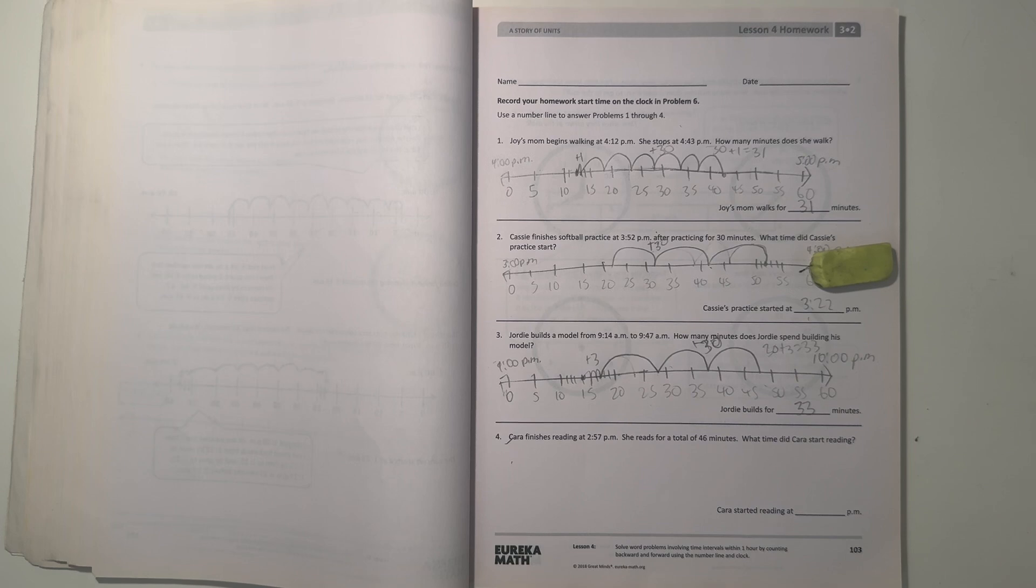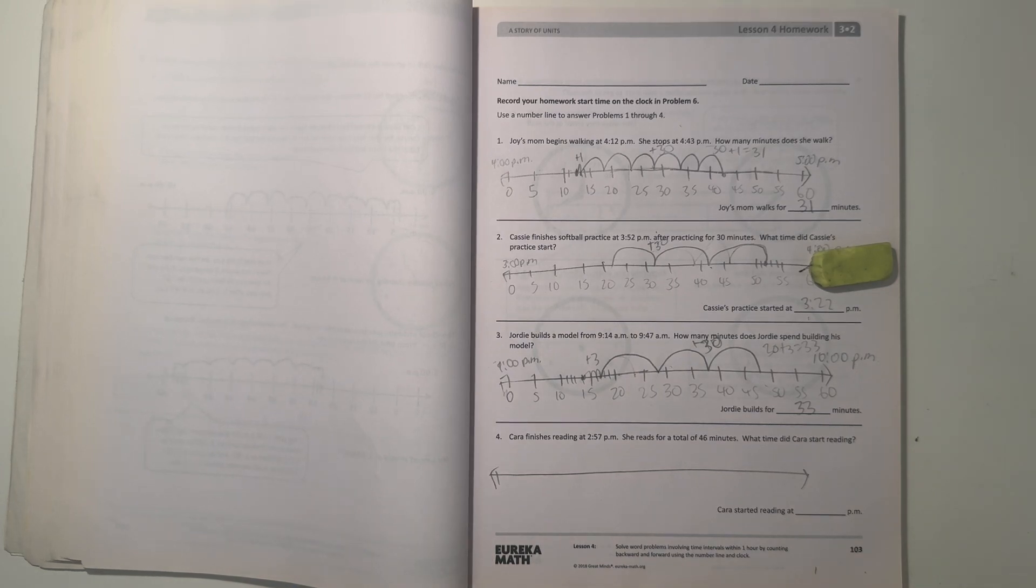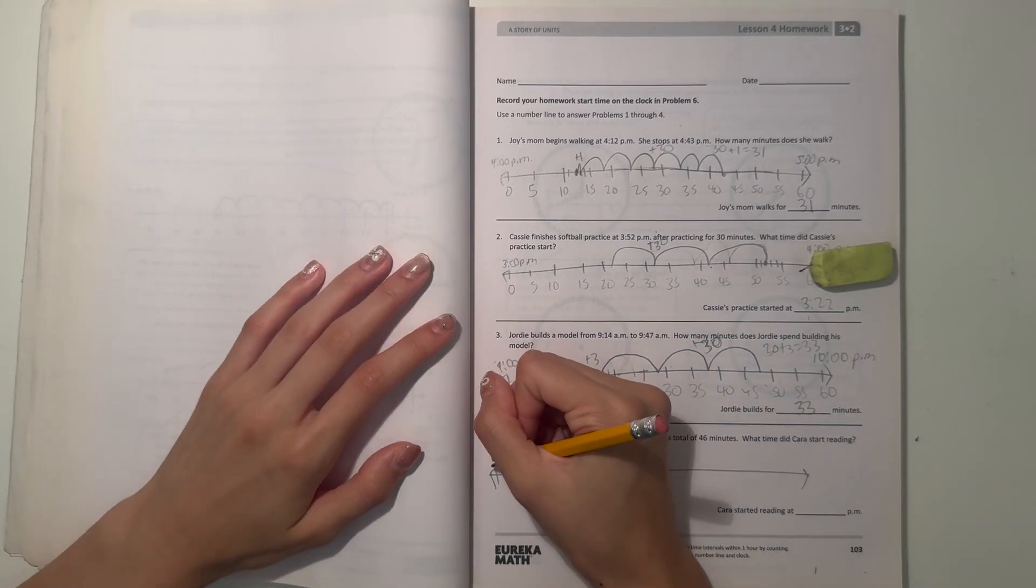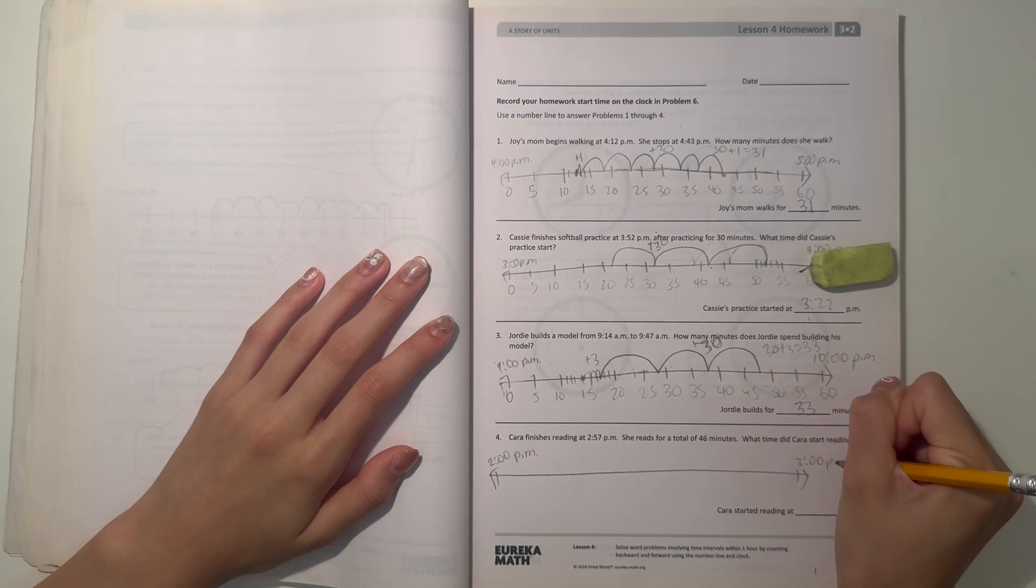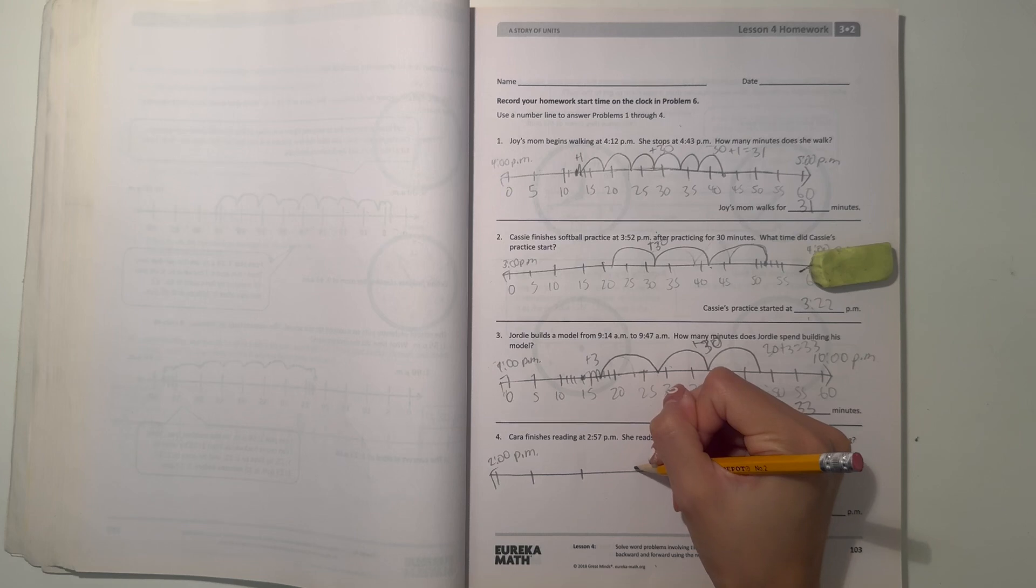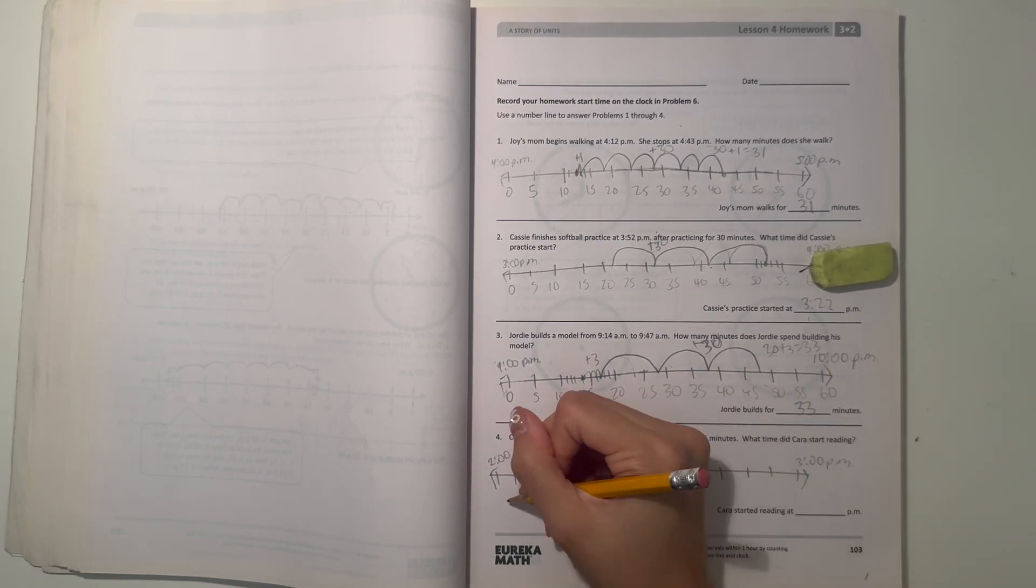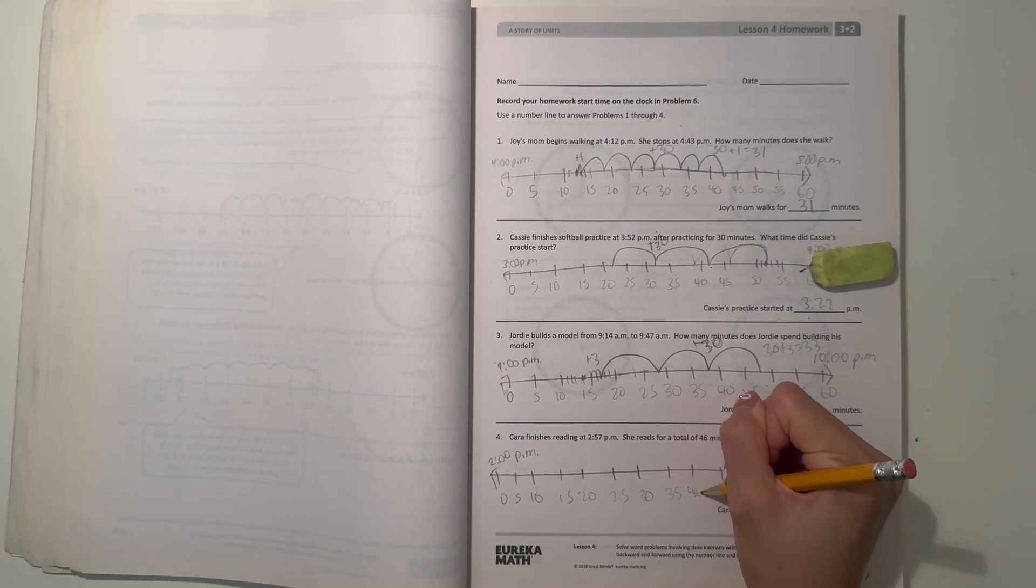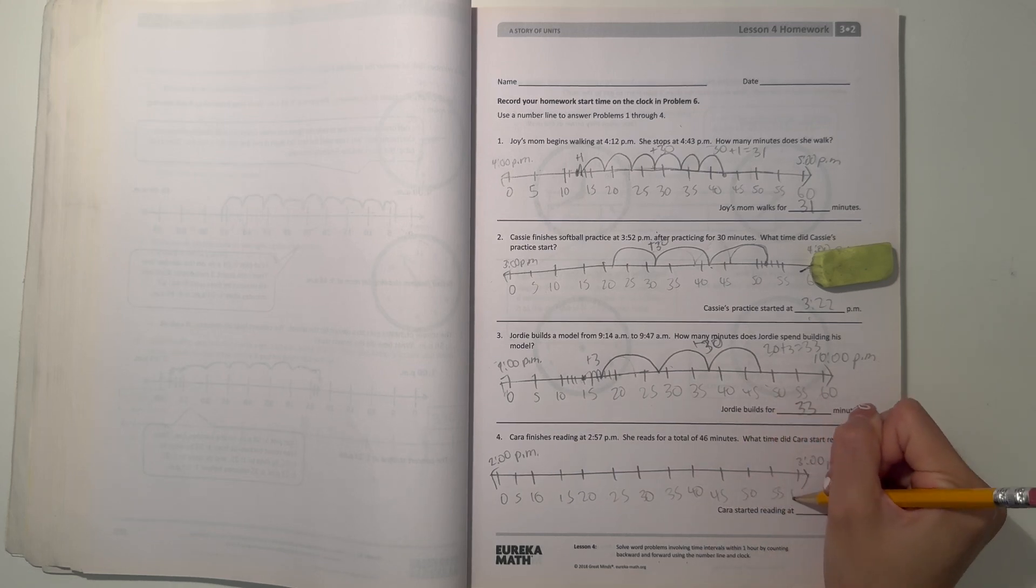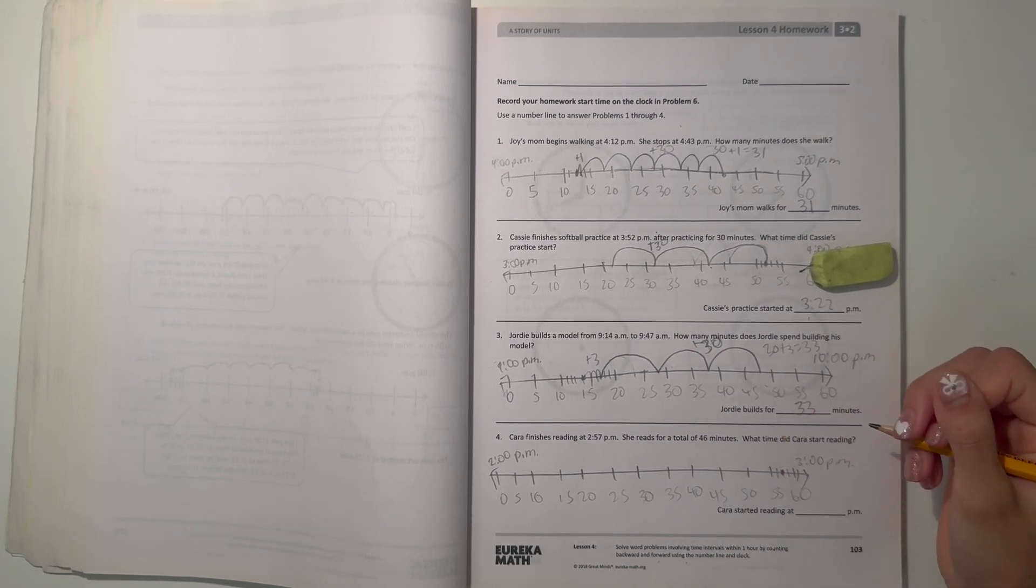Number four: Car finishes reading at 2:57. She reads for a total of 46 minutes. What time does she start reading? It's another working backwards problem. So 2:57. We have 10, 20, 30, 40, 50, and let's put our ticks in between: 0, 5, 10, 15, 20.